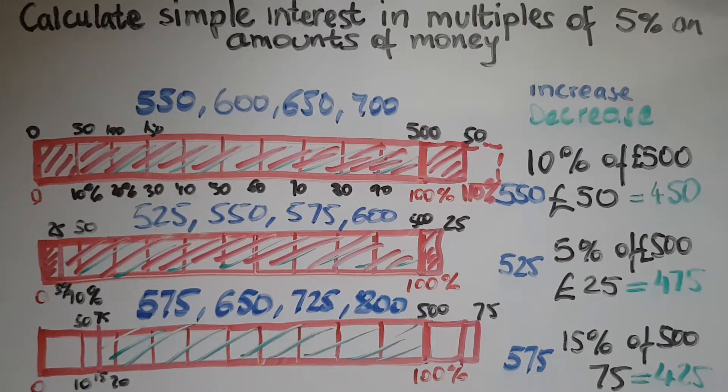So adding £75 each time. Simple interest means adding the same percentage, the same amount, year on year.